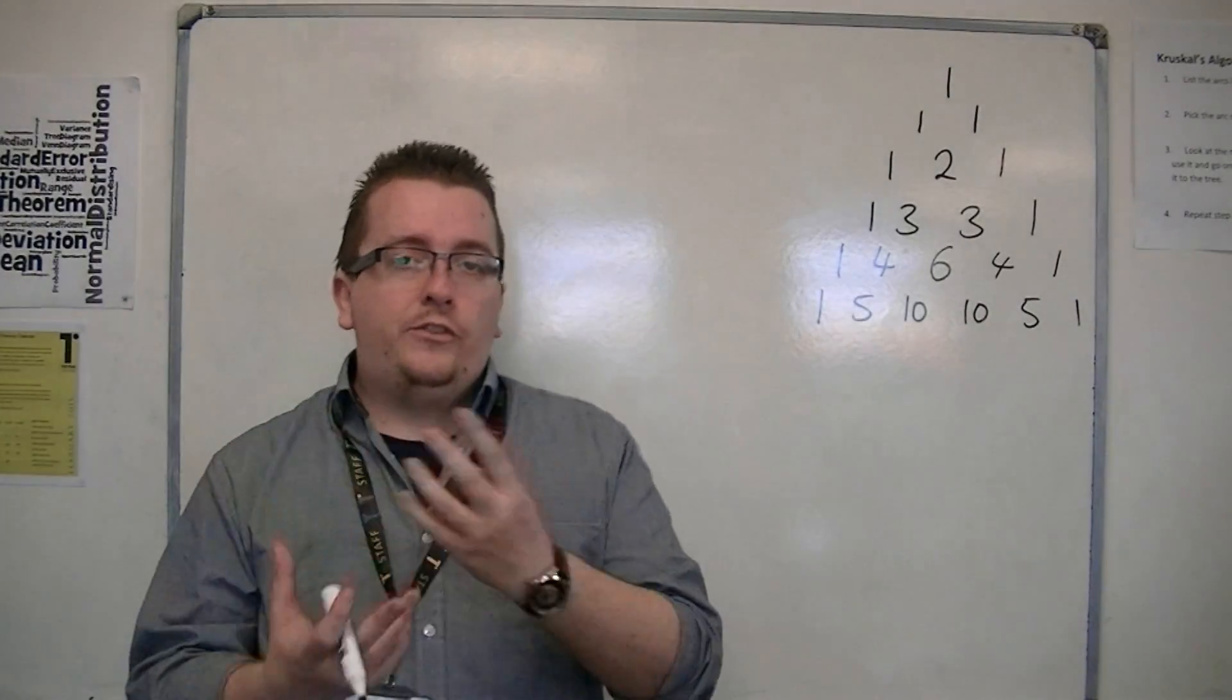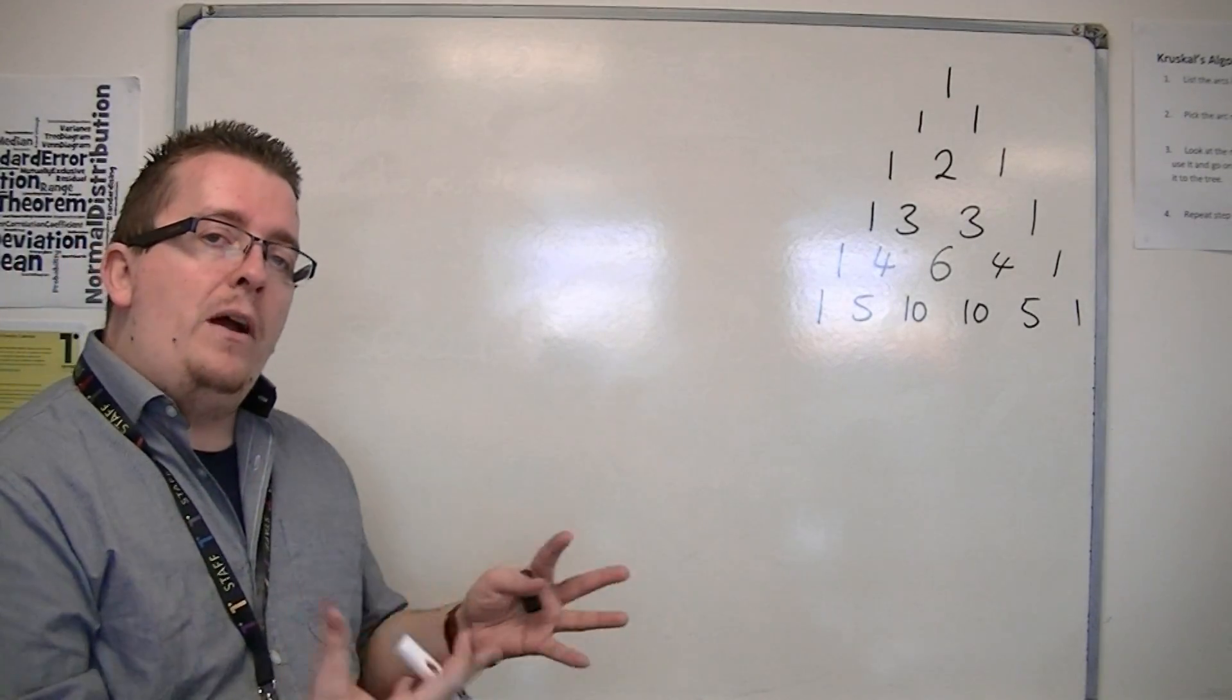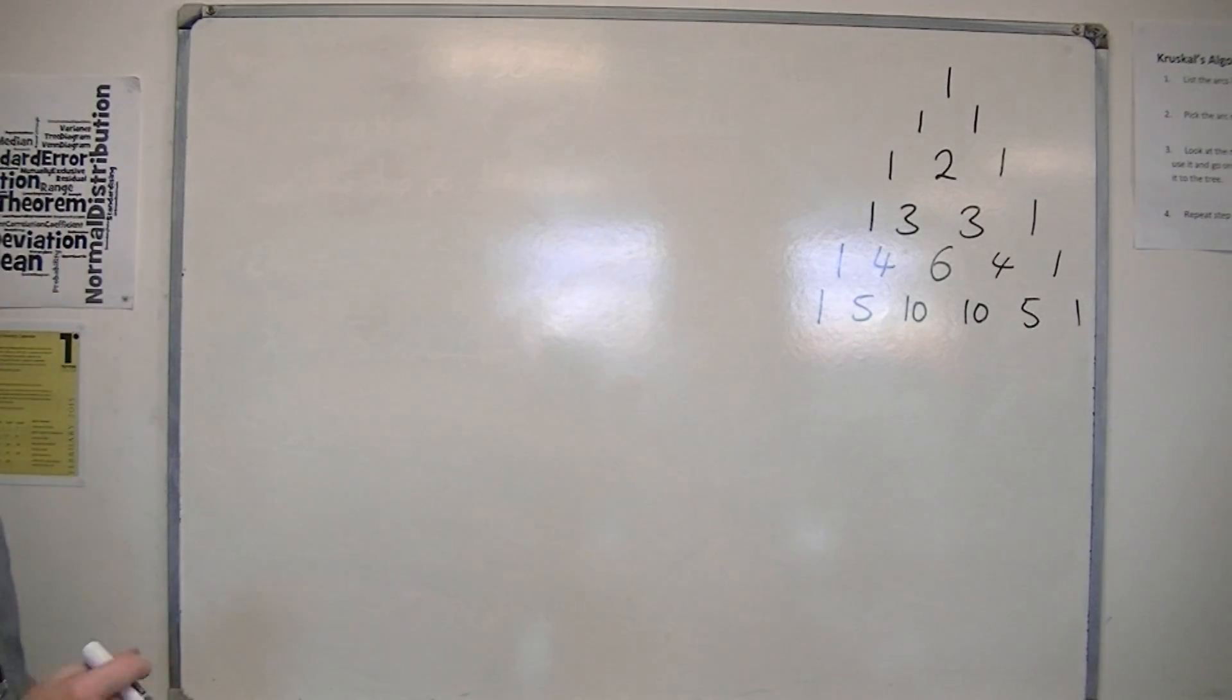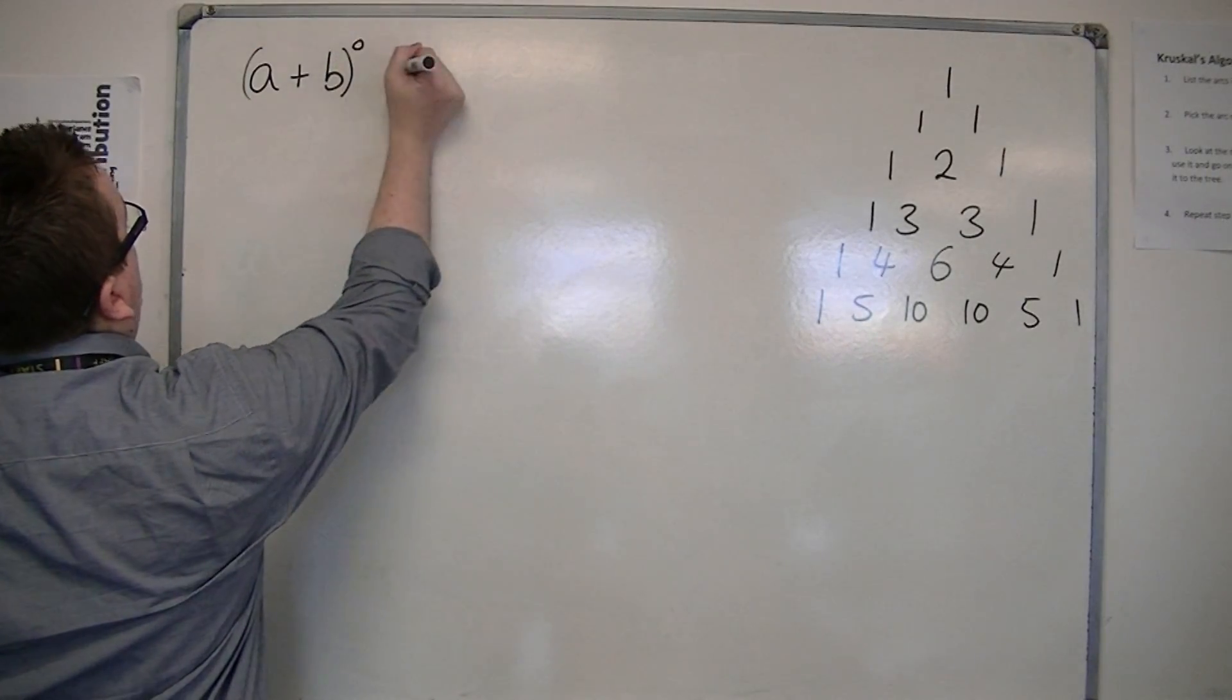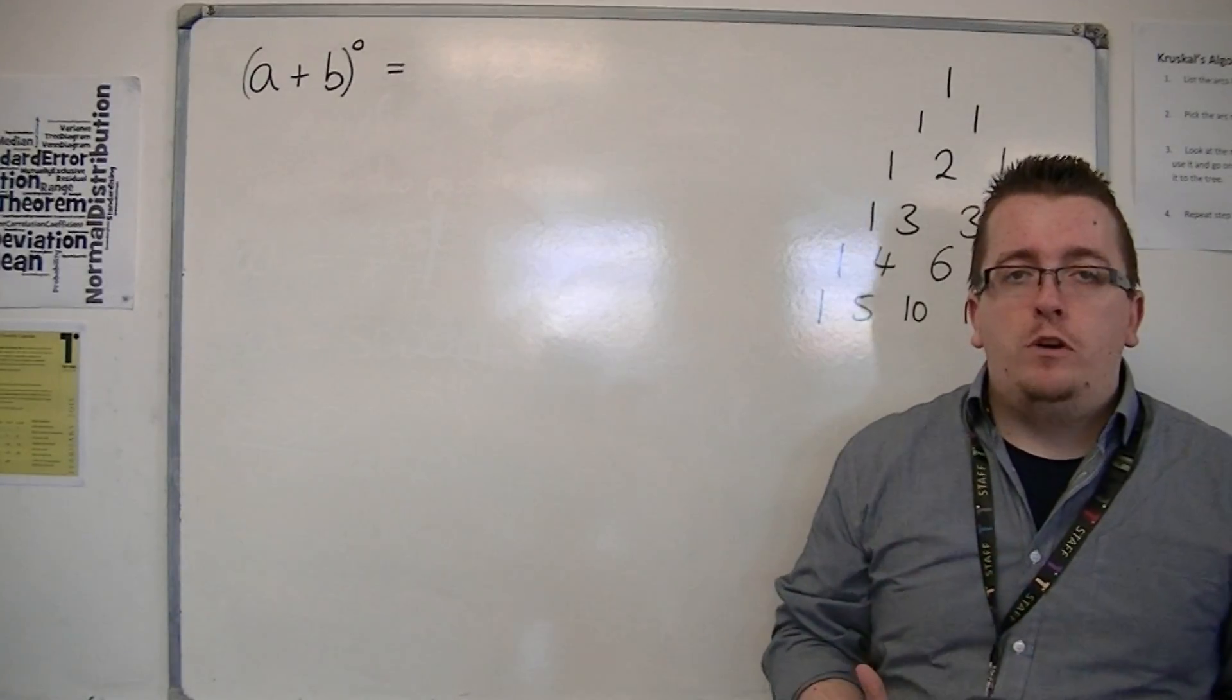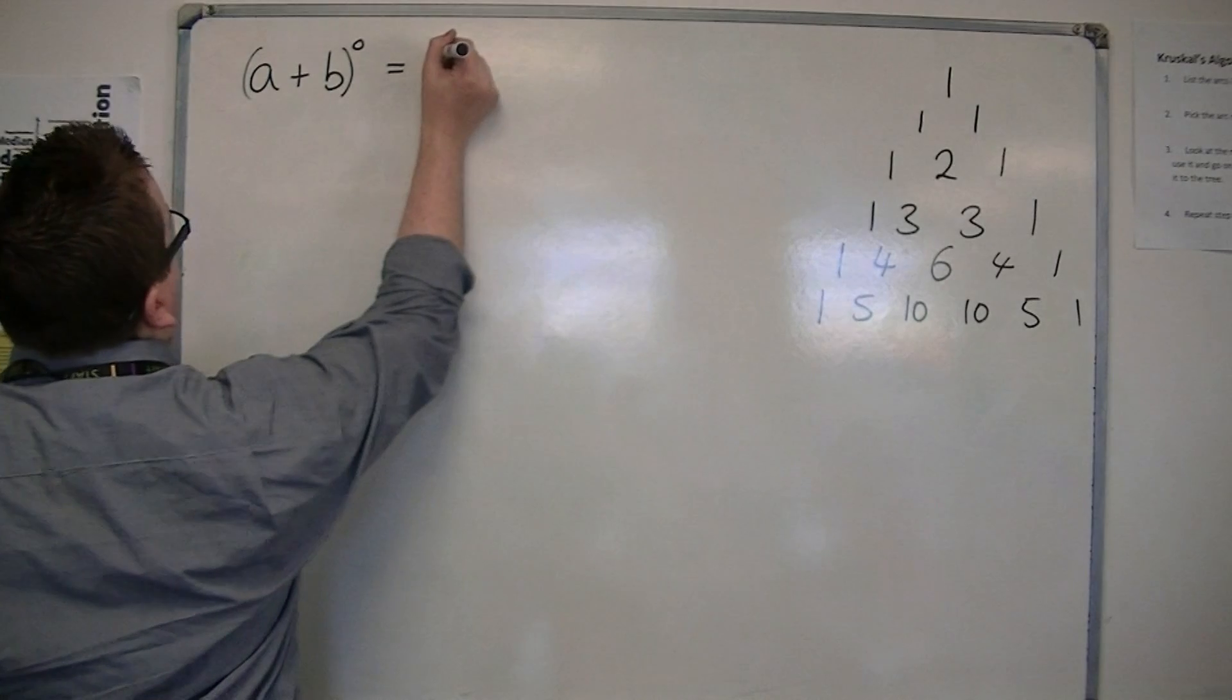Now, this has direct relation to what we're going to do next. It's really about spotting patterns. We're going to start with (a+b)^0. Well, any number to the power of 0 is just 1. So (a+b)^0 is just 1.